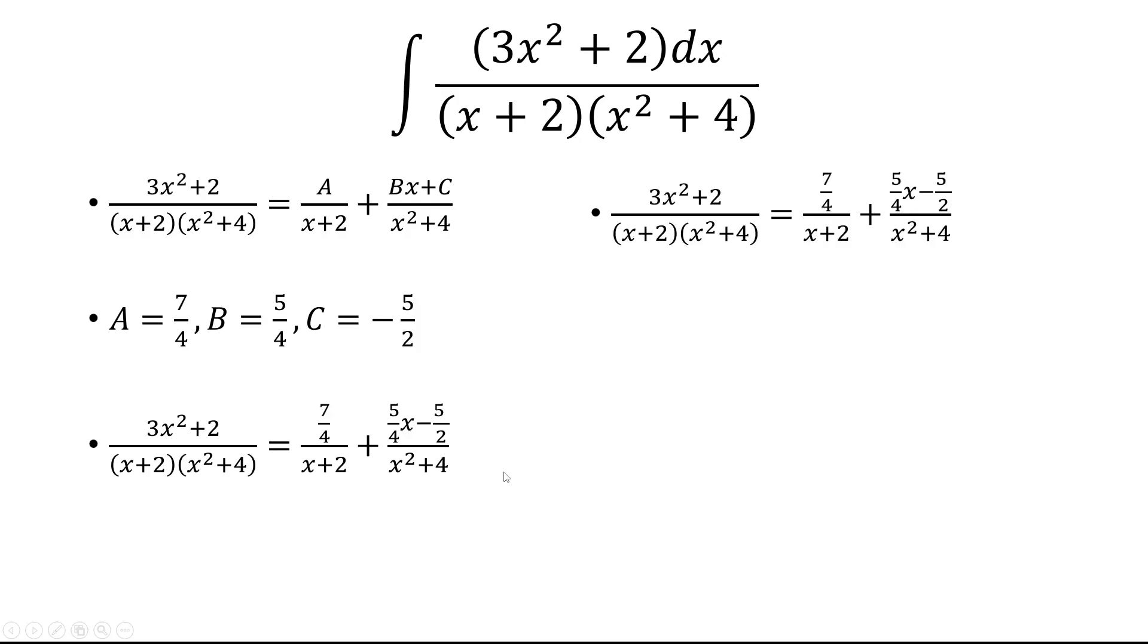But first, let's just do some algebra. So before we do any algebra, let's first find the integral of the left one. So the 7 fourths over x plus 2. We factor out the 7 fourths, and then the antiderivative 1 over x plus 2 is ln of x plus 2.